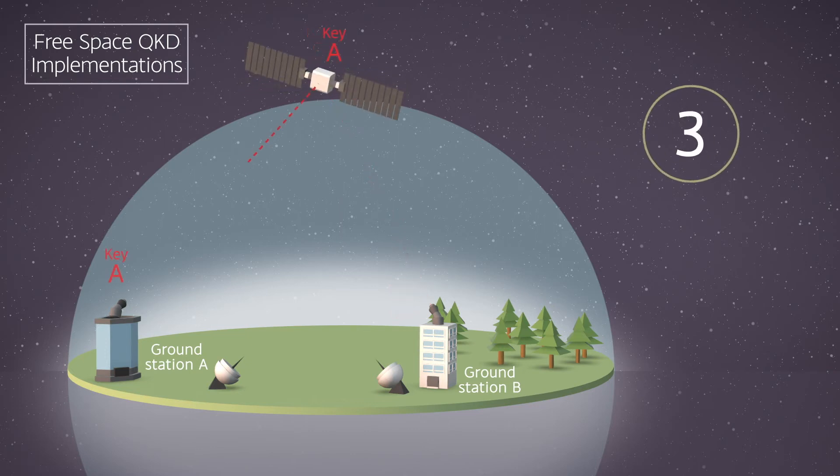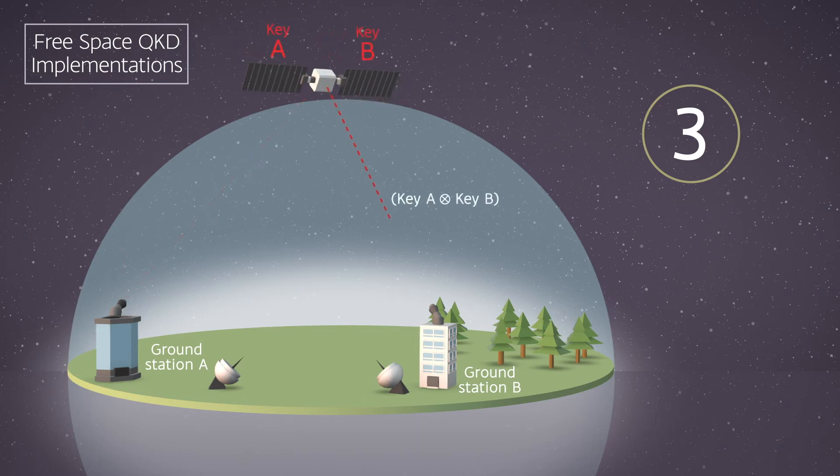Three: To enable the sharing of a common key, the hap transmits key A exclusive or key B to the second optical ground station.